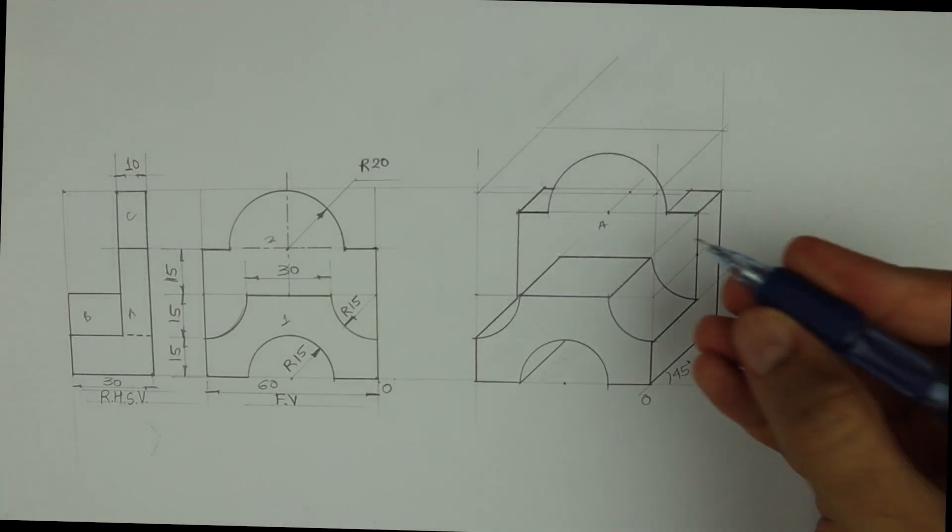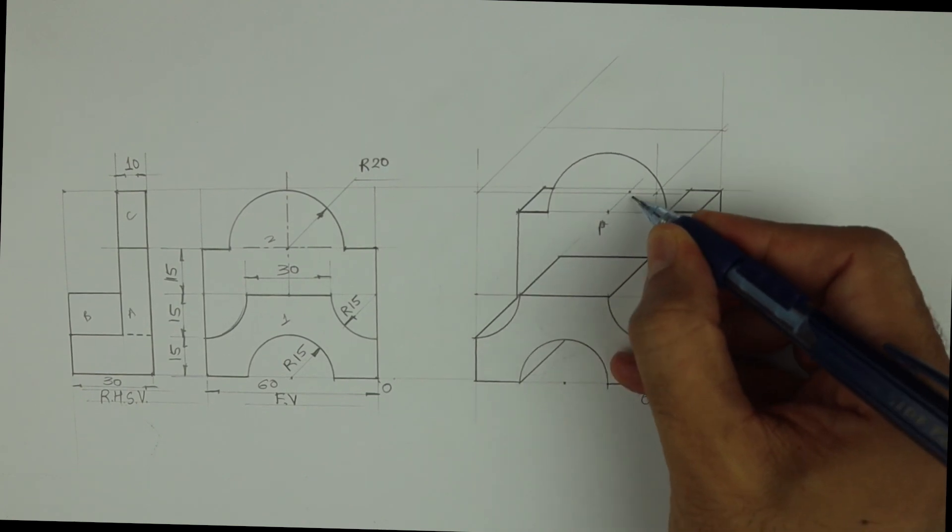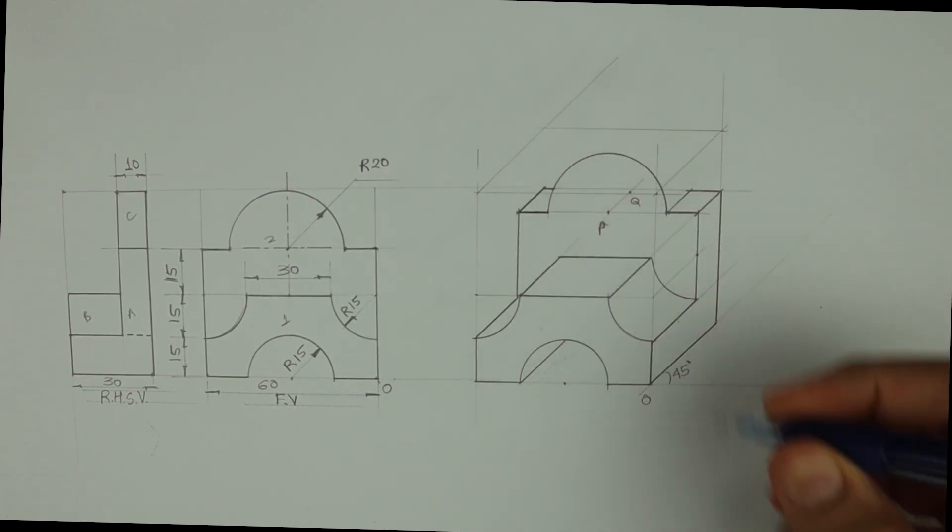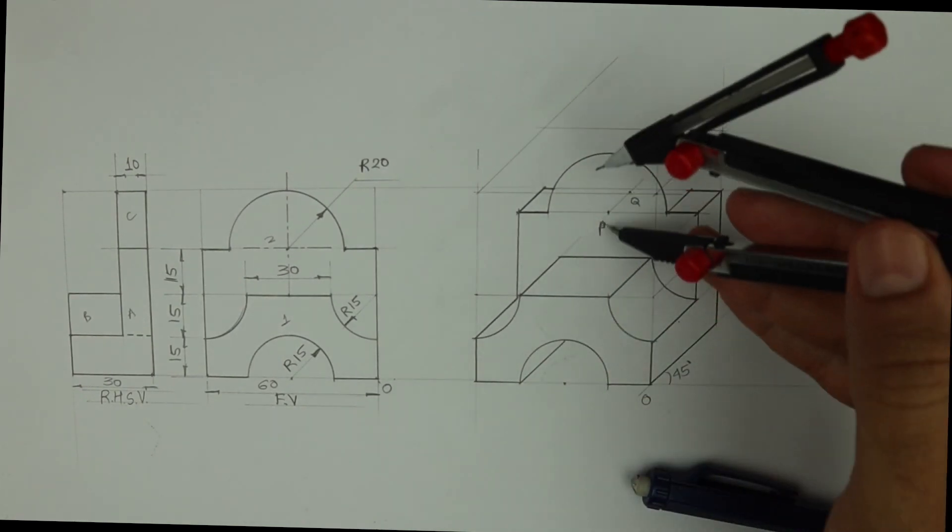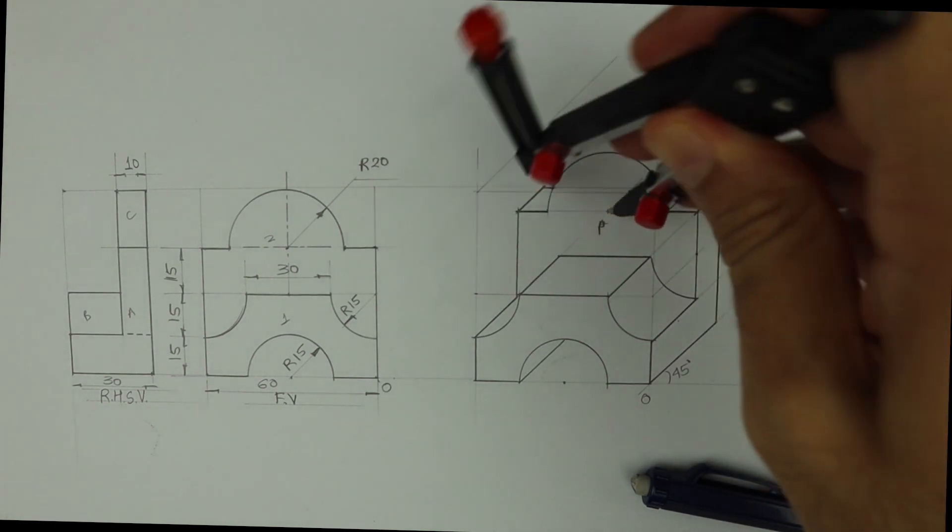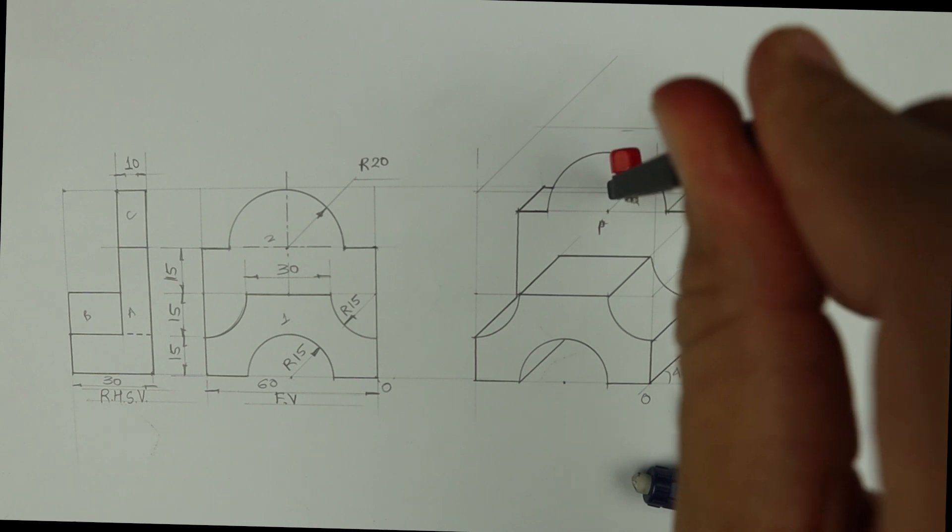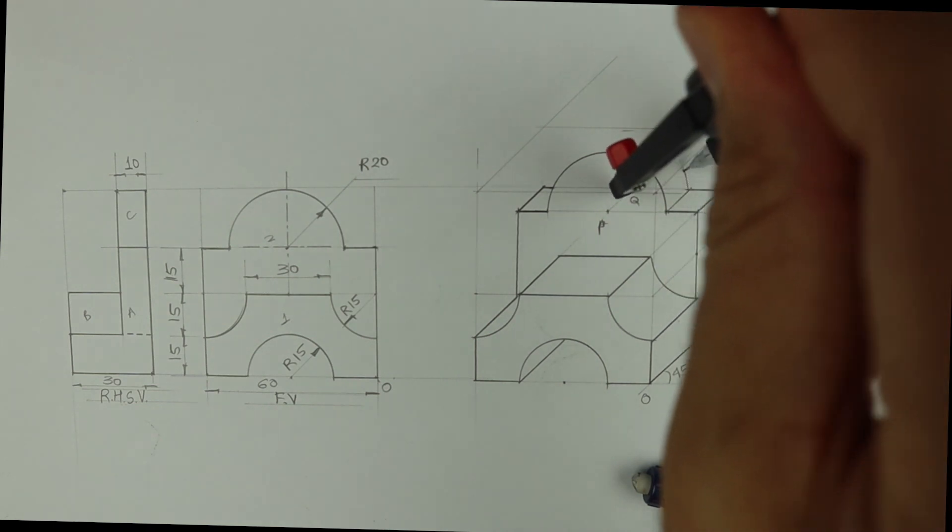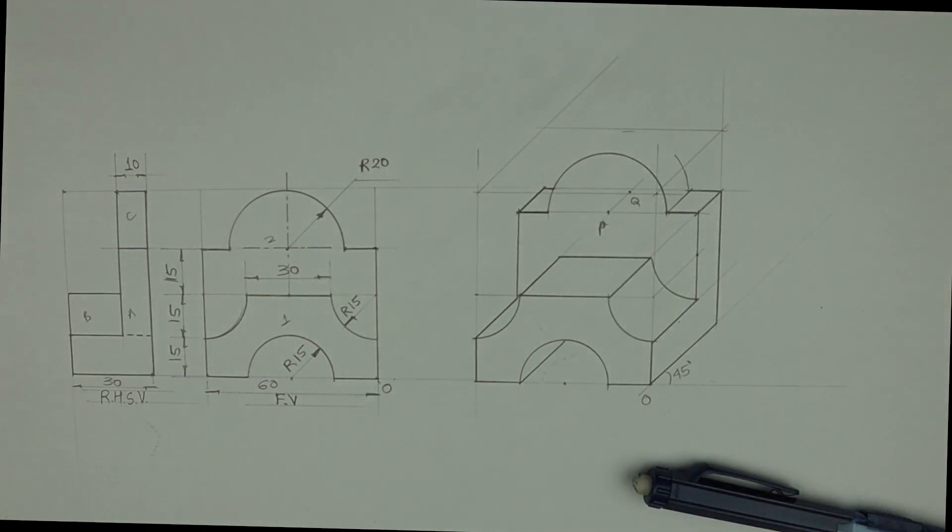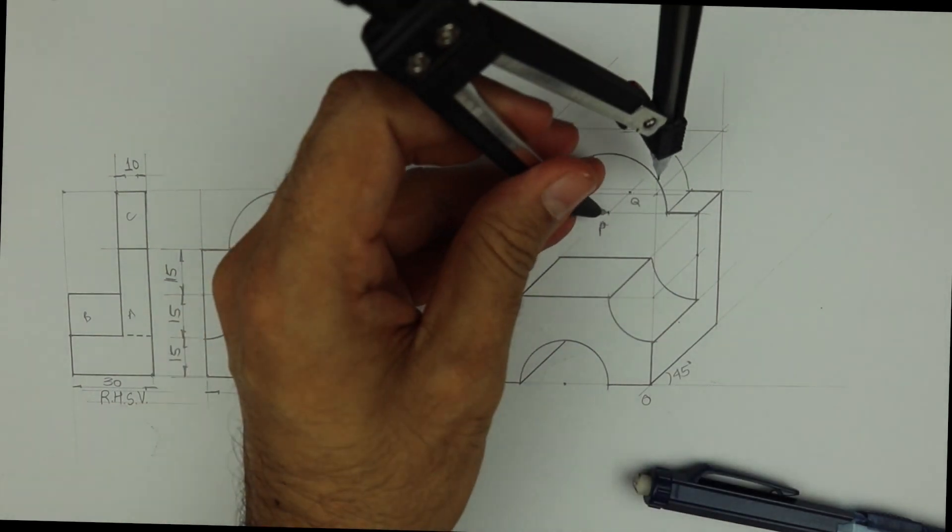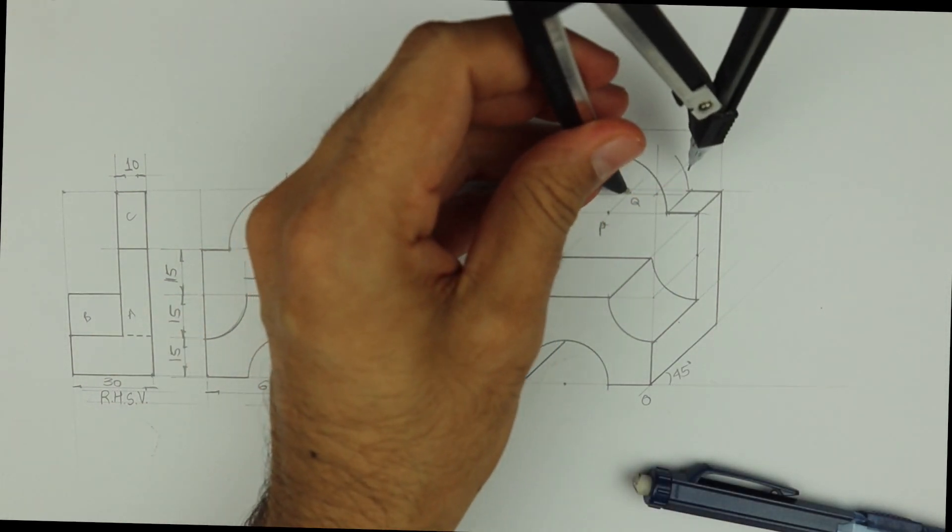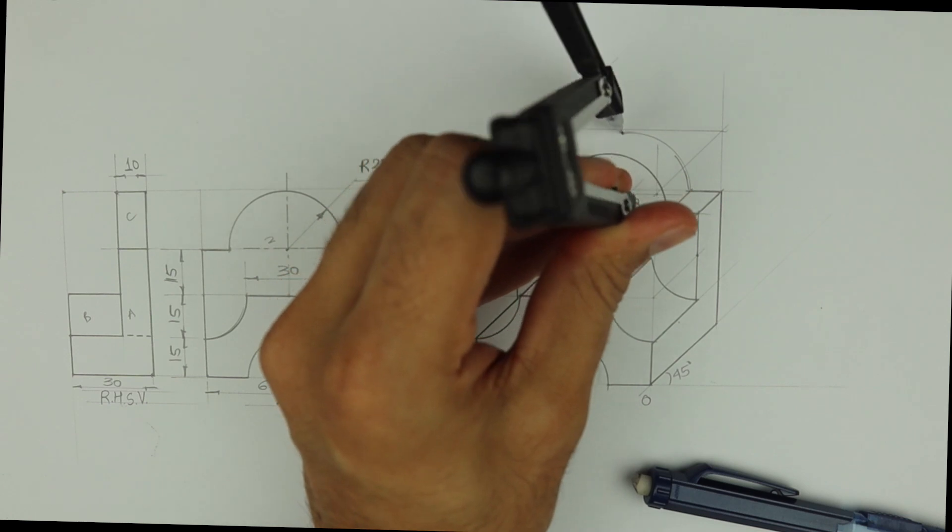This is A. Then you go behind by, sorry, P and this is Q. So take this radius from Q, you can draw R. See this, same radius 20 you take. Take this radius, go behind by 10 and you draw radius 20.